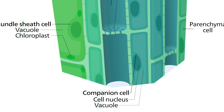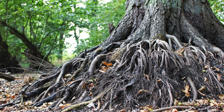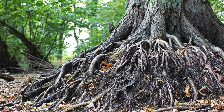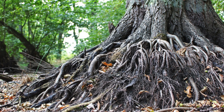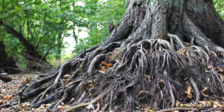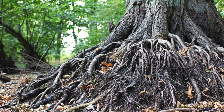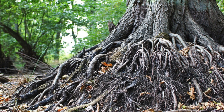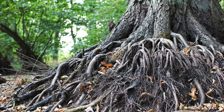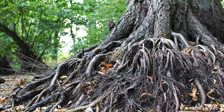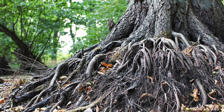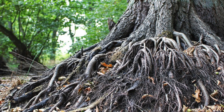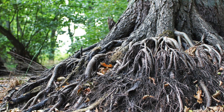Finally, we've got root hair cells. Root hair cells help roots take up water more effectively by increasing the surface area for water to move in and out of the cells. They also have a large permanent vacuole which speeds up the movement of water by osmosis.